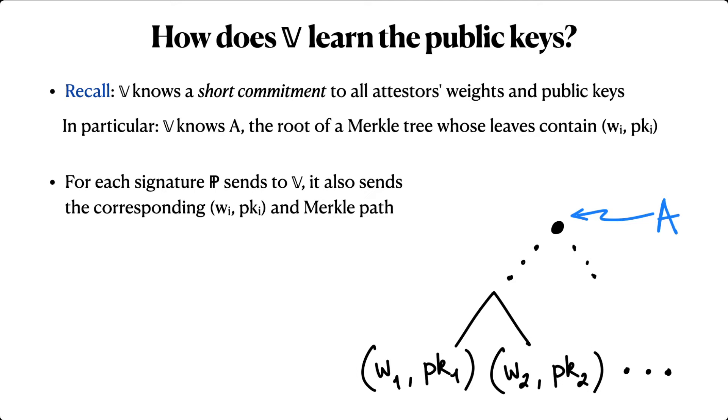We'll call this the attester's tree, with root capital A. This means that for each signature that the prover sends to the verifier, it also sends the corresponding weight and public key, plus an authenticating path in the attester's tree.